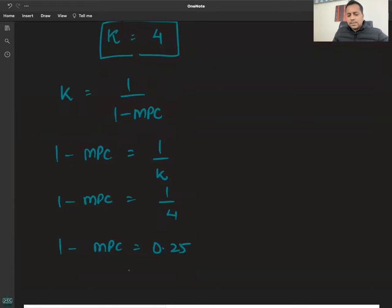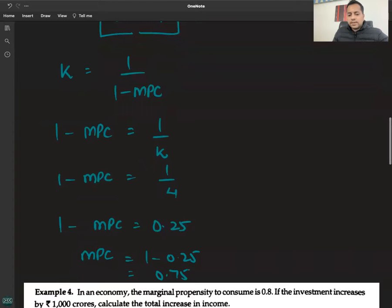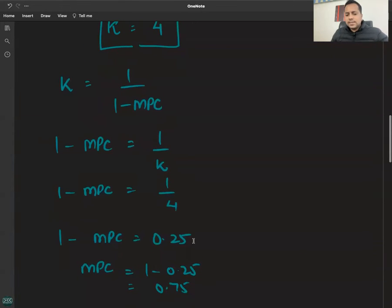If we make MPC positive, MPC is equal to one minus 0.25 which is equal to 0.75.